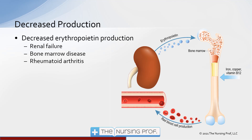Decreased erythropoietin production is another pathway that can lead to anemia. As shown in the picture on the right, the stimulus for erythropoietin production comes from the kidney, and erythropoietin then stimulates the bone marrow to produce more red blood cells. We still need iron, B12, and other nutrients to make that production happen. The underlying stimulus for this whole process is hypoxia — when tissues recognize insufficient oxygen-carrying capability, erythropoietin production increases, which then increases red blood cell production.